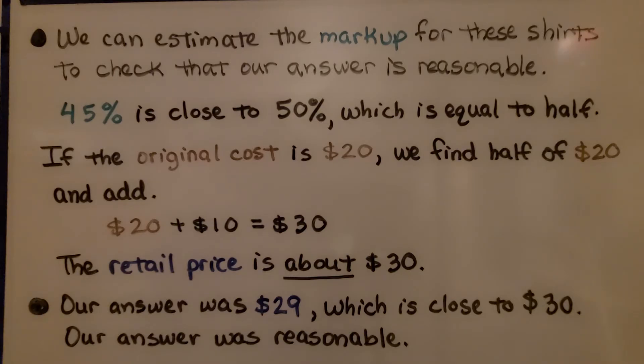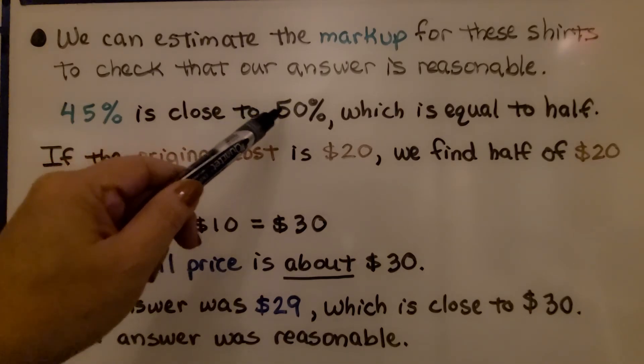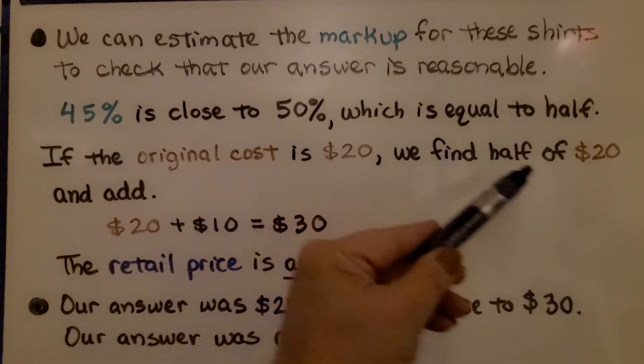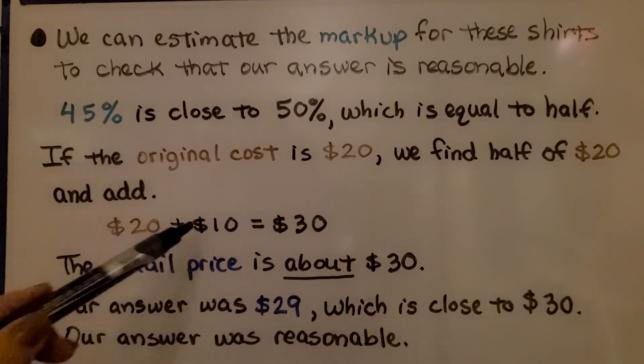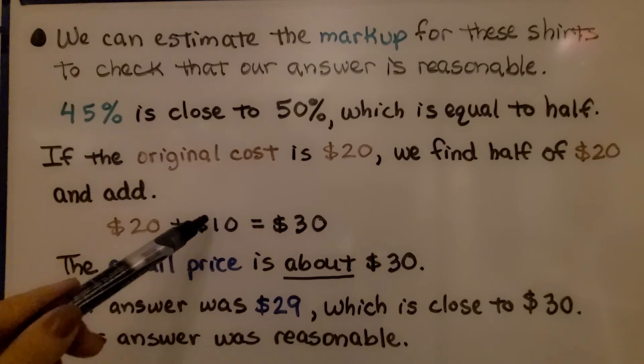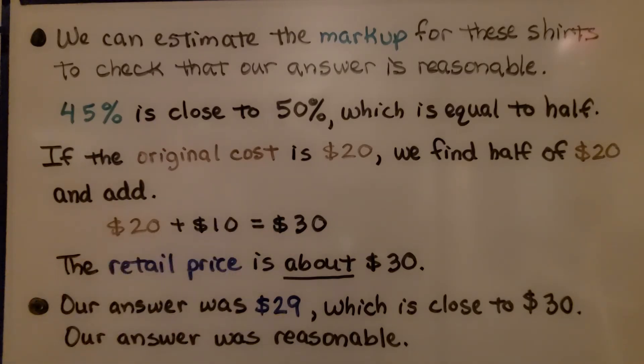We can estimate the markup for these shirts to check that our answer is reasonable. 45% is close to 50%, which equals half. If the original cost is $20, we find half of $20 and add. Half of $20 is $10, so we have the original cost plus about $10 markup, so that's $30. The retail price is about $30 because we rounded up to 50%, so it's not exact. Our answer was $29, which is close to $30, so our answer was reasonable.